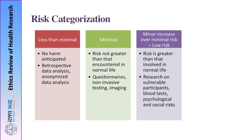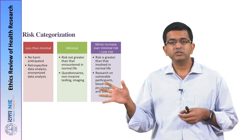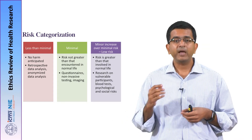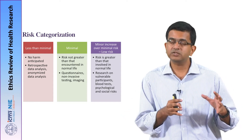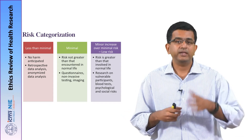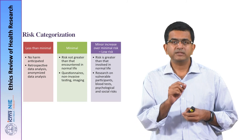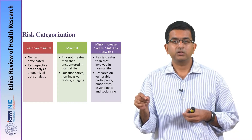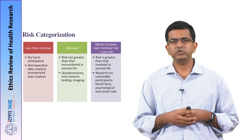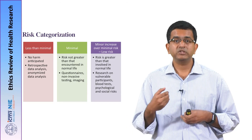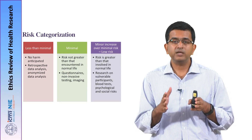Then you have research projects with a minor increase over minimal risk. These are research projects which actually have risks greater than what is involved in normal life, further categorized into those which have low risk and those which have high risk. Examples include research on vulnerable participants — because the same minimal-risk research carried out on a vulnerable participant becomes a minor increase over minimal risk — as well as minimally invasive procedures like blood testing, or research associated with stigmatization and psychological risks.